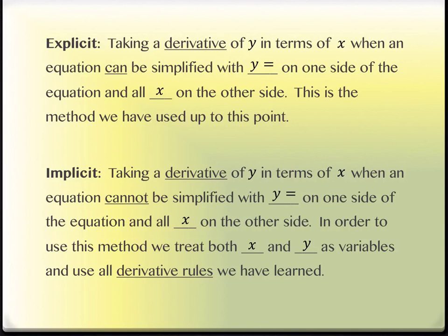So either when something cannot be solved for y — and we'll see some of those in a minute — or when solving for y makes it really ugly and messy, sometimes it's nice to do a different method. That method is called implicit differentiation. One of the pros is it usually makes the calculations cleaner, simpler, easier to work with. One of the cons is that you have to remember one additional step: when you take the derivative of something that has a y in it, you have to write down dy/dx, because the derivative of y is y prime, and we can't forget that.